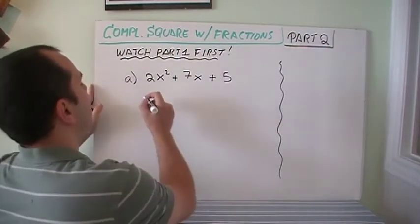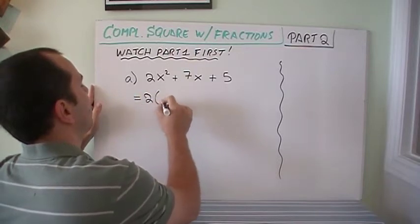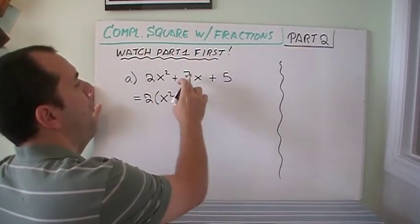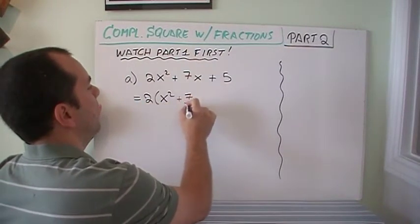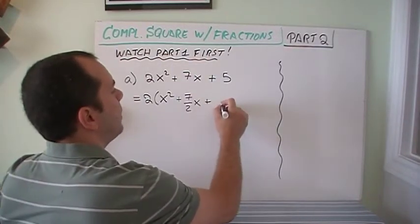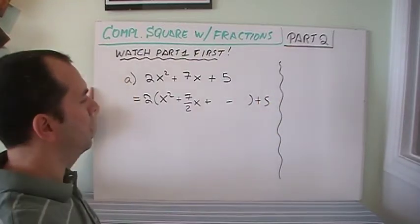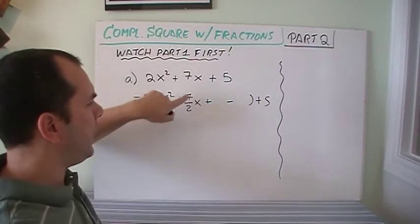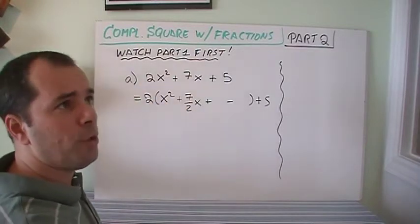The first step was to factor out the 2. Now I need to do 7 divided by 2, which is just 7 over 2x, right? Now I'm going to add a number, I'm going to subtract the number, and I put the plus 5 outside. Okay, I need to get half of 7 halves. Well, I can do it in my head.